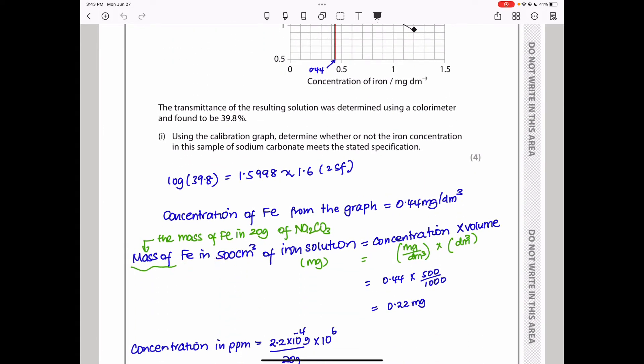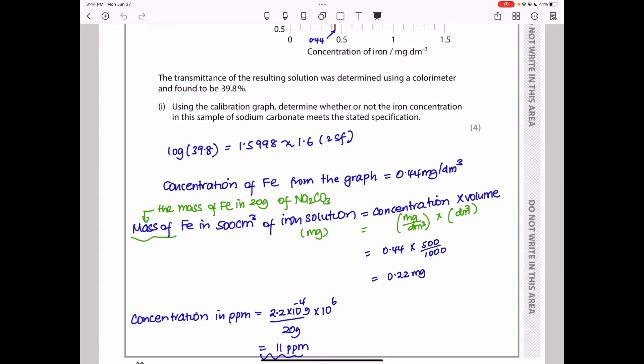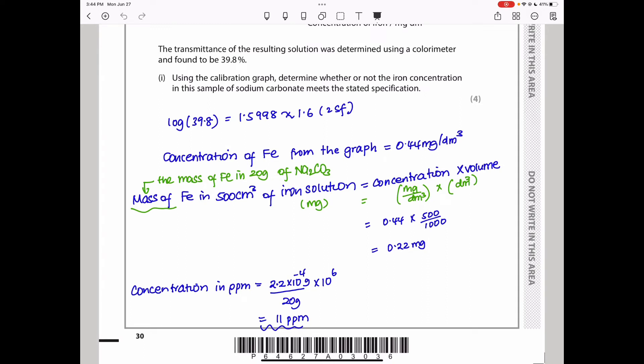The concentration appears to be 0.44 mg per dm³. Now that I have the concentration, I know they added 500 cm³ and 20 grams. I want to find the mass of iron in this amount. Since I have the concentration in mg per dm³ and the volume, I can multiply: 0.44 mg per dm³ times (500/1000) dm³, which gives me 0.22 mg. I have the mass of the sample that was weighed, which is 20 grams of sodium carbonate. Concentration in ppm is mass of impurity divided by mass of the whole thing times 10⁶. I converted milligrams into grams, so 0.22×10⁻⁴ divided by 20 times 10⁶ gives me 11 ppm as my answer.